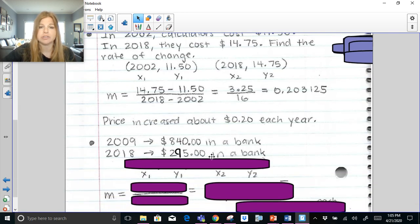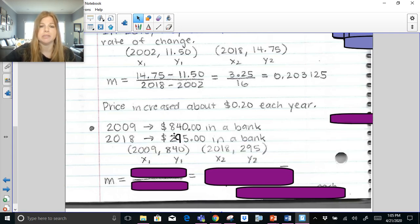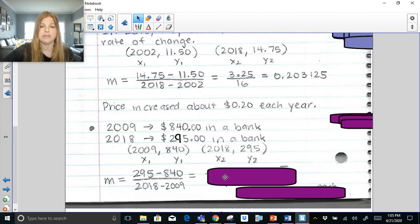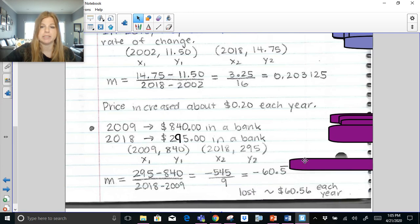If I say in 2009, you have $840 in your bank. And then in 2018, you now have $295 in your bank. Those become your ordered pairs. So (2009, $840) and (2018, $295). Y sub 2 minus y sub 1. So $295 minus $840 over x sub 2 minus x sub 1, 2018 minus 2009. $295 minus $840 is negative 545 divided by 9. I get negative 60.5 repeating, which means you're losing about $60.56 each year.